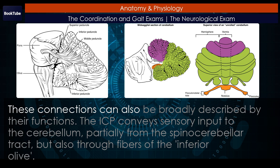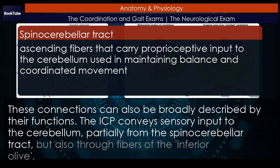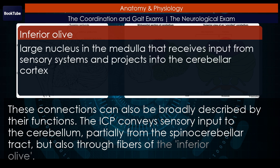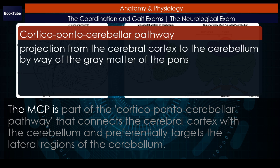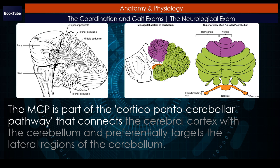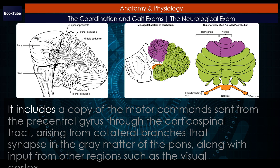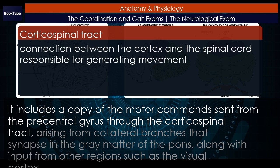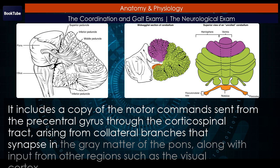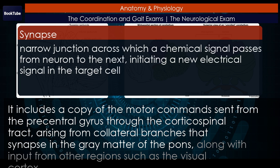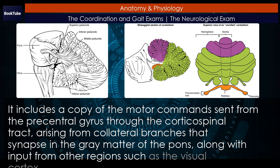These connections can also be broadly described by their functions. The ICP conveys sensory input to the cerebellum, partially from the spinocerebellar tract, but also through fibers of the inferior olive. The MCP is part of the corticopontocerebellar pathway that connects the cerebral cortex with the cerebellum and preferentially targets the lateral regions of the cerebellum. It includes a copy of the motor commands sent from the precentral gyrus through the corticospinal tract, arising from collateral branches that synapse in the gray matter of the pons, along with input from other regions such as the visual cortex.